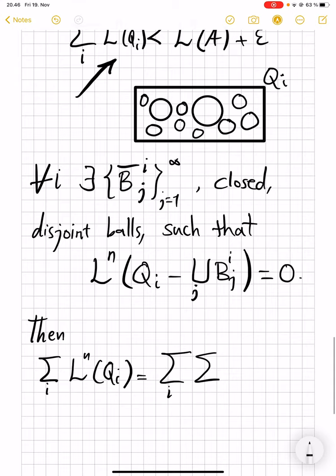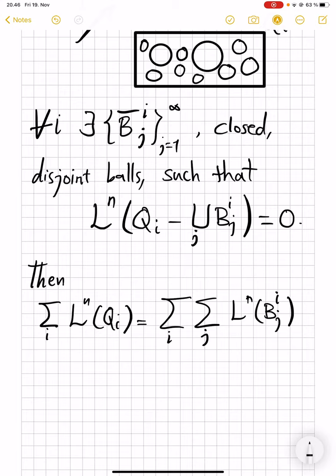Then, what we have is that the summation of L^n of these cubes is equal to... So, for every i, instead of L^n of Q_i, we can write summation of L^n of these balls that filled it up from j. Because of that, we can ignore the part where they don't cover. And now, again, we use the fact that we know how to measure the balls. So this will be ω_n diameter of b_ij divided by 2 to power n.